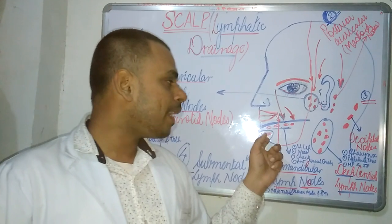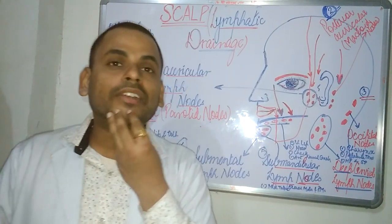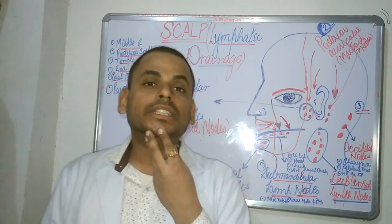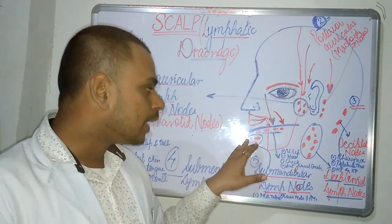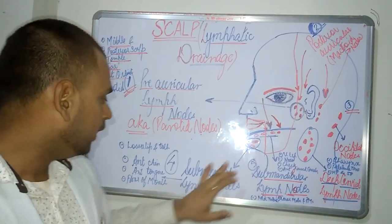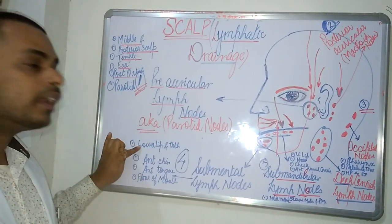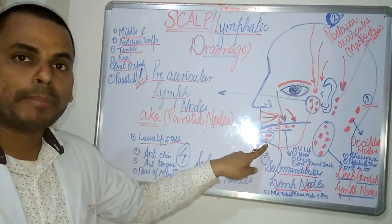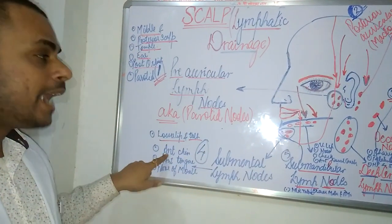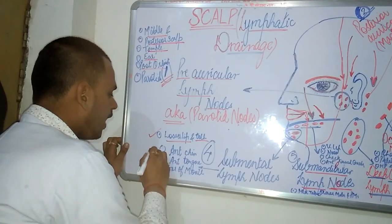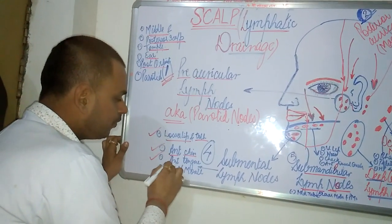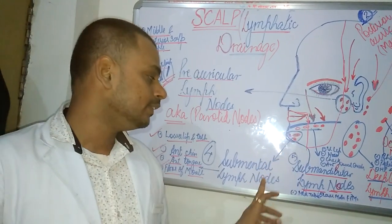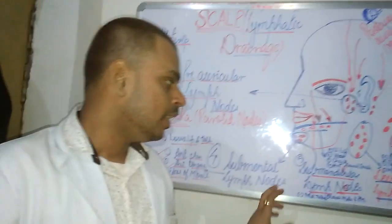Moving on to the submental lymph nodes — the submental region lies in the chin area. The submental lymph nodes drain the lower lip and teeth, the anterior part of the chin, the anterior tongue, and the floor of the mouth.